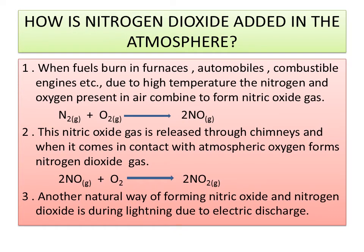How is nitrogen dioxide added to the atmosphere? When fuels burn in furnaces, automobiles, and combustion engines at high temperatures, the nitrogen and oxygen present in the air combine to form nitric oxide: N₂ + O₂ → 2NO. This nitric oxide (NO) gas is released through chimneys, and when it comes in contact with atmospheric oxygen, it forms nitrogen dioxide (NO₂). Another natural way of forming NO and NO₂ is during lightning due to electric discharge.